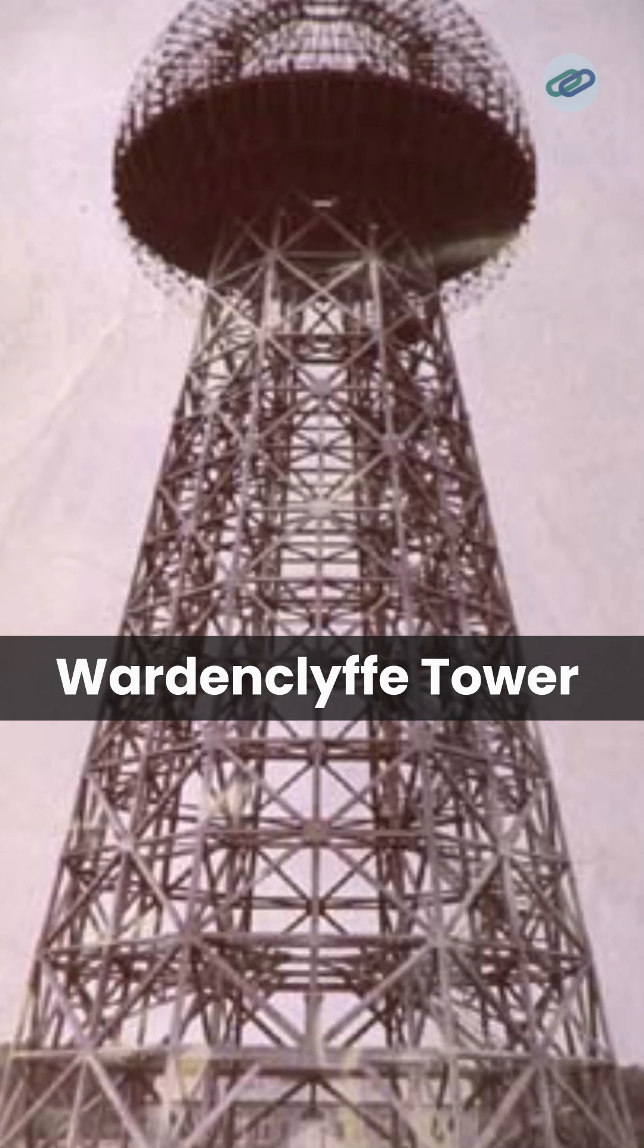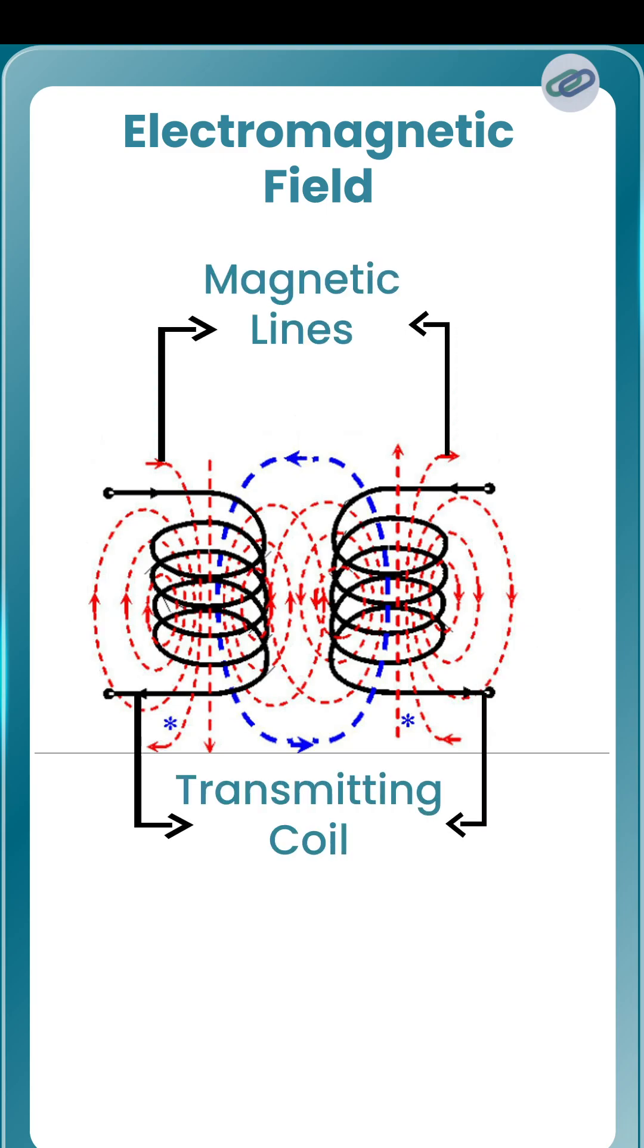Wireless power transmission uses an electromagnetic field of a certain frequency as the medium of transfer. This frequency depends on the range of transmission.